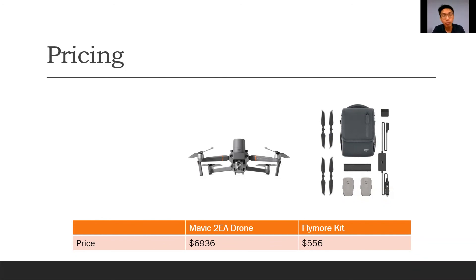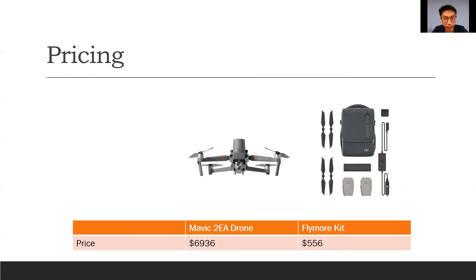We've come to the end of the webinar. The recommended retail price of the M2EA is $6,936, and most people buy it with the Fly More Kit — which includes two additional batteries, spare propellers, and a multi-charger — for an additional $556. Please drop us an email if you want to inquire or see a live demo. I'm happy to take any live questions you might have about the M2EA.